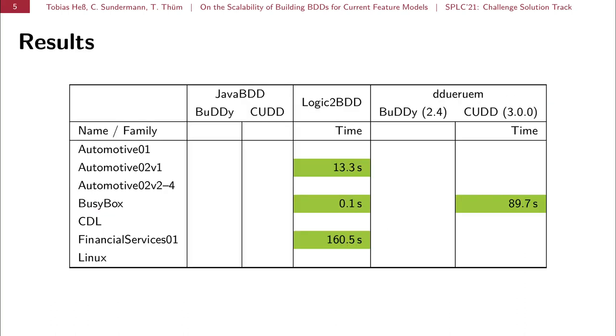So let's dive straight into it. These are the results of our experiments. We had a set of 18 feature models in the leftmost column. Why 18? Because CDL is a family of feature models. It consists of about 120 and we randomly picked 10 feature models from this group, because they are all very similar. So you can see we only managed to build BDDs for three feature models.